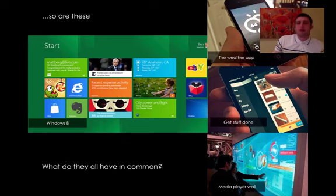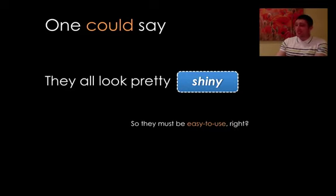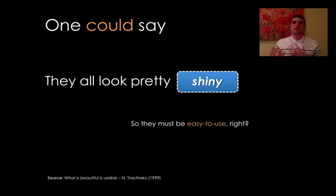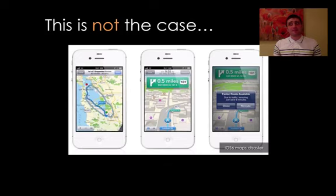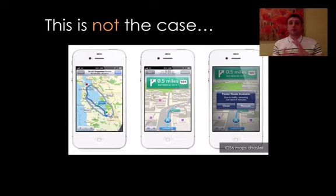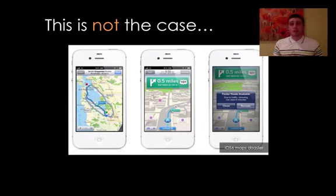So what do they all have in common? Well, one could say they all look pretty shiny. So they must be easy to use, right? This comes from a piece of research that says that if things look good, people think they will work well. However, this is not the case. Remember iOS 6 maps? They improved their map app to include 3D maps and completely amazing overlays and interactions with the map in their latest iOS. However, it didn't work — particularly if you were in Europe. Customers got very angry, and many didn't even bother updating their firmware, which is crucial for Apple's model.